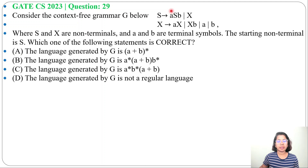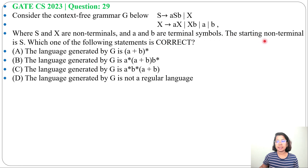Let's solve one previous question of TOC. This question was asked in GATE CS2023, question number 29. Consider the context free grammar G below. S and X are non-terminals and A and B are terminal symbols. The starting non-terminal is S. We need to determine which one of the following statements is correct, and four options are given.